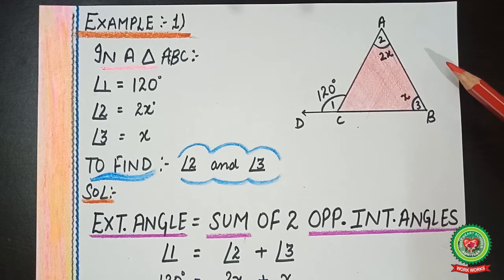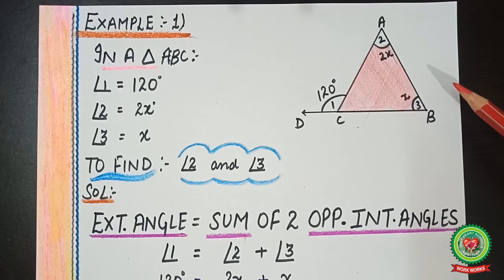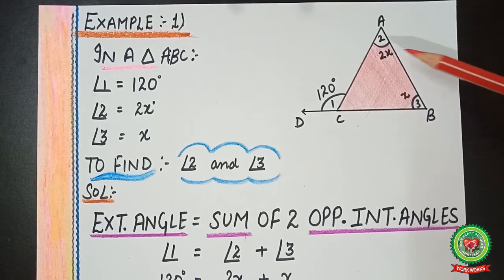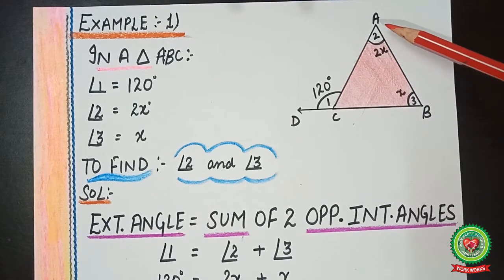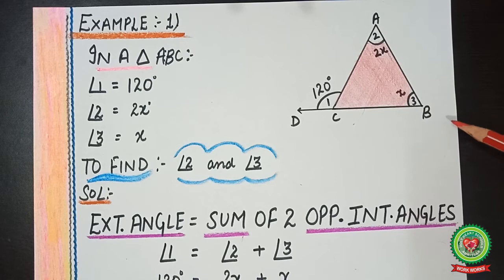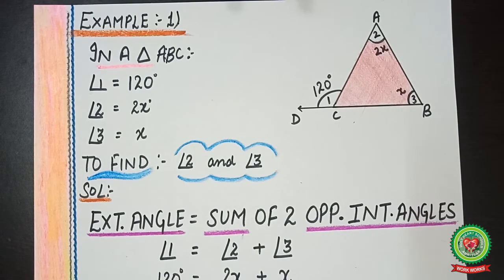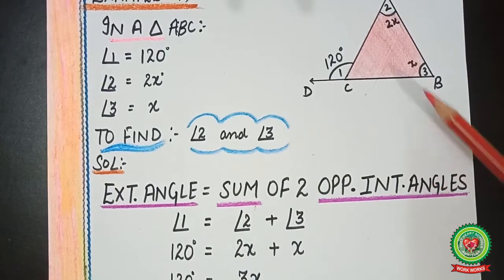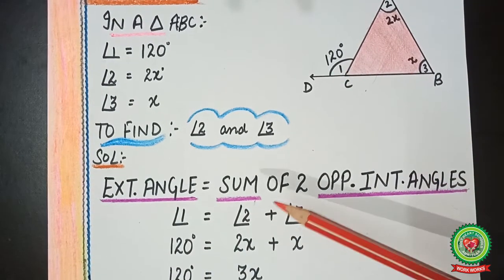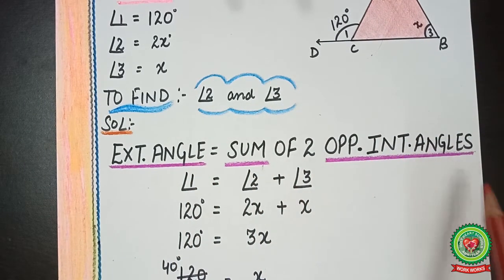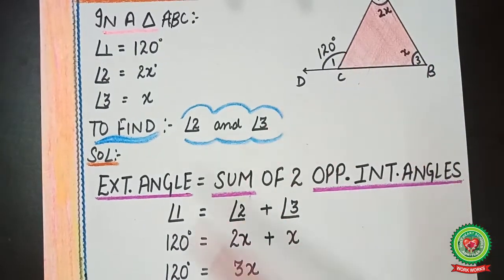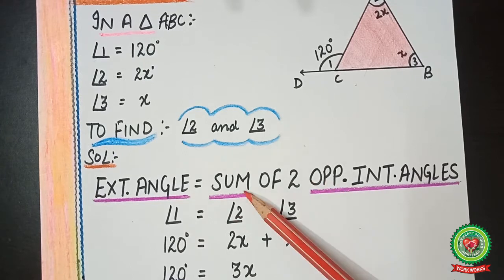We always express angle values in degrees like 120, 150, 30, or 90 — so we need to find the value of x first. Once we find x, we can substitute it into the expressions for angle 2 and angle 3. Because an exterior angle is given, we apply the exterior angle property: the exterior angle of a triangle is equal to the sum of the two opposite interior angles. The exterior angle here is angle 1.